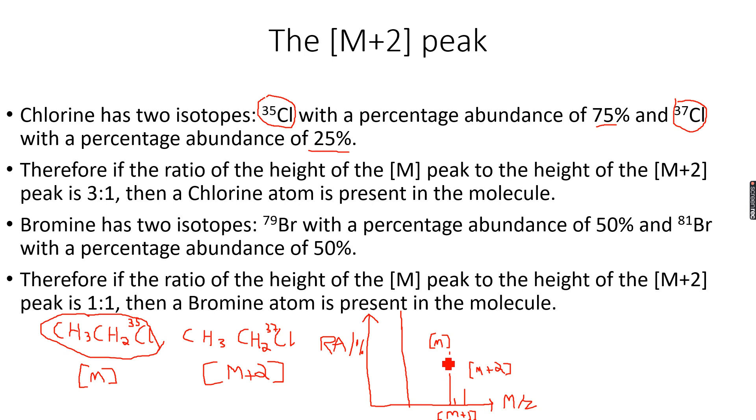If you calculate the ratio of the heights for the M peak and the M+2 peak, you will get 3:1 because the Cl-35 isotope is three times more abundant than the Cl-37 isotope. So the heights of these peaks will be 3:1.